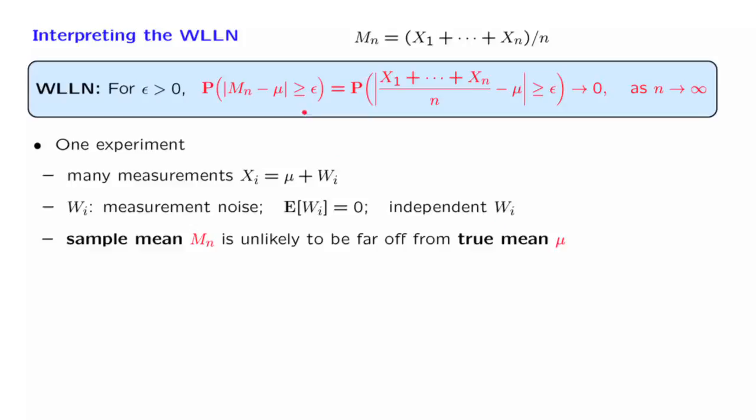So the sample mean is, in some ways, a good way of estimating the true mean. If n is large enough, then we have high confidence that the sample mean gives us a value that's close to the true mean.